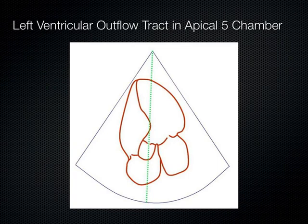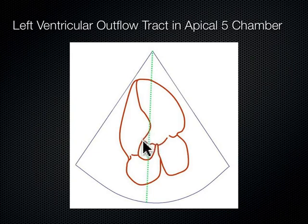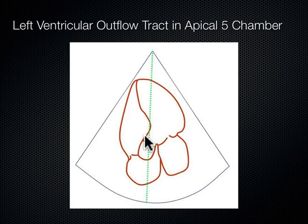That left ventricular outflow tract seen in the apical five chamber view — this is just a schematic. This is where you're going to drop that Doppler gate, and somewhere along that gate you'll see that little TIE-fighter-looking thing right on the edge of this aortic valve. That's where we drop the Doppler to set us up to measure cardiac output.